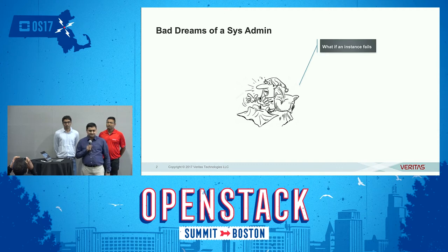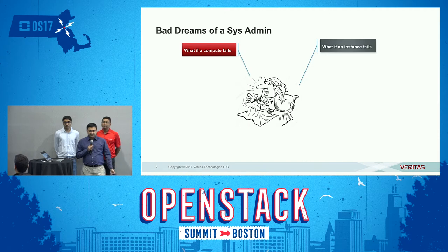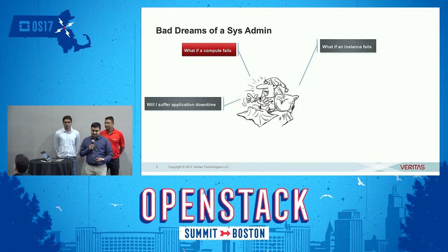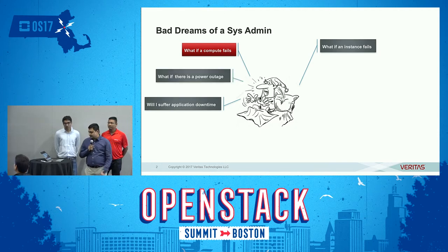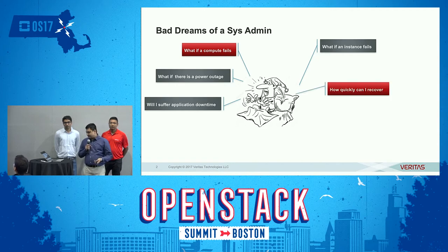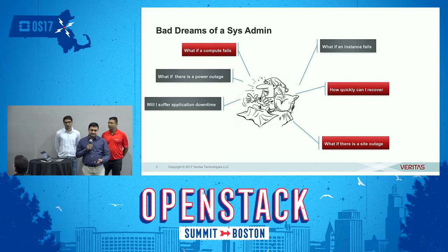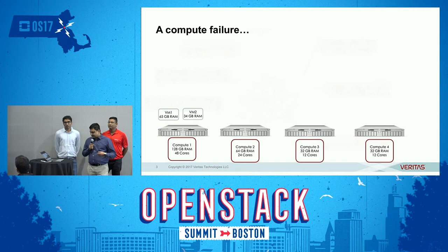What if an instance goes down? That's very important because your application is hosted there. What if a compute goes down? Will my application experience a downtime, or how quickly will it recover? There are other things which can go wrong — there can be a power failure, there can be a rack failure, or a site failure itself. Those things require you to think deeply.